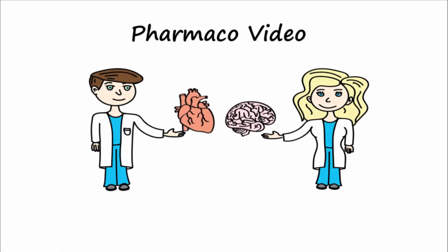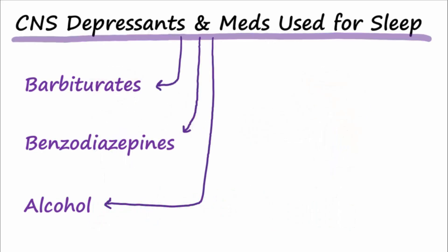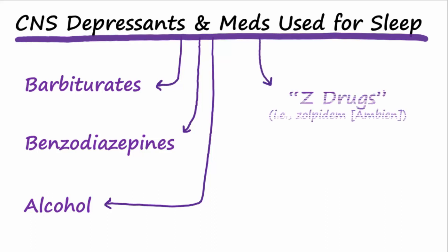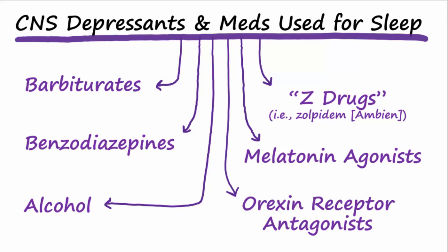The topic today is miscellaneous hypnotics, which are used for the induction and maintenance of sleep. Of the CNS depressants, this video discusses the Z-drugs, like Ambien, melatonin agonists, and orexin receptor antagonists.